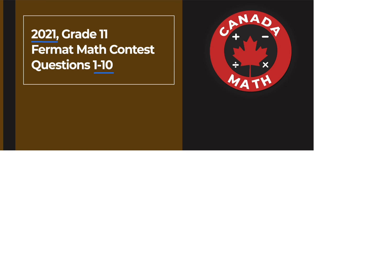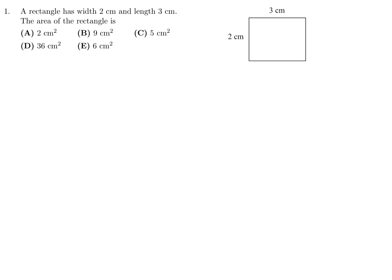Questions 1 through 10 on the 2021 grade 11 format math contest. A rectangle has width of 2 and length of 3. The area is area of a rectangle is length times width. The length is 3, the width is 2, so 3 times 2 is 6. Number 1, the answer is E.